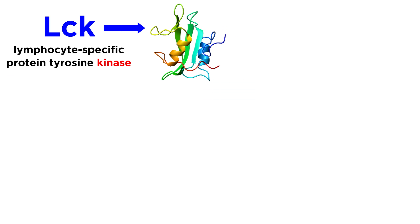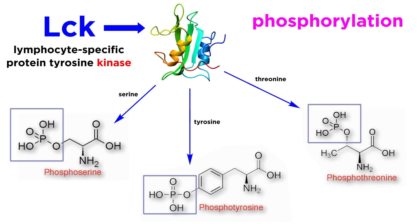Many immune cell receptors are linked to enzymes called kinases. Kinases covalently attach a phosphate group to serine, threonine, or tyrosine amino acid residues in a reversible process called phosphorylation.